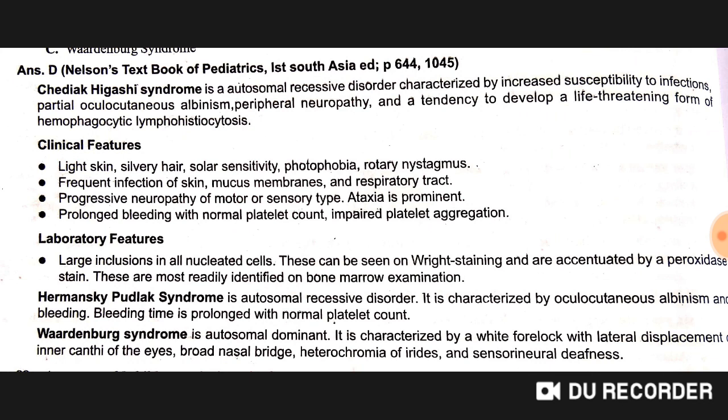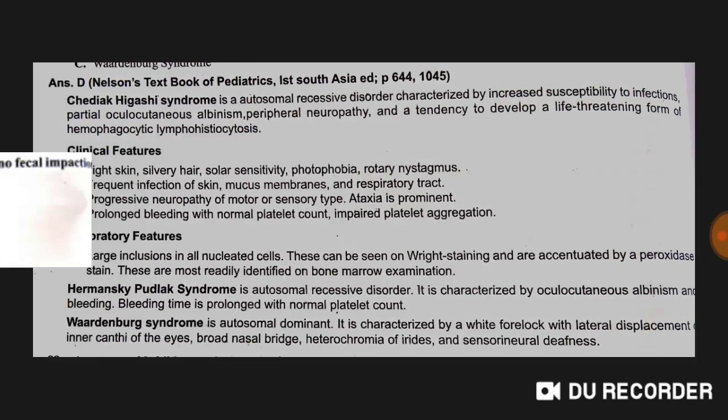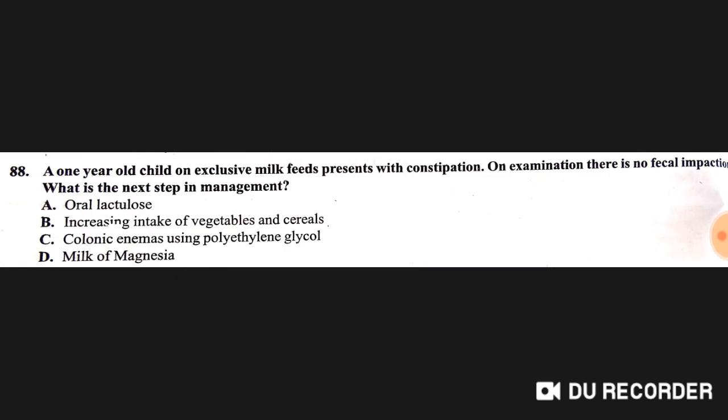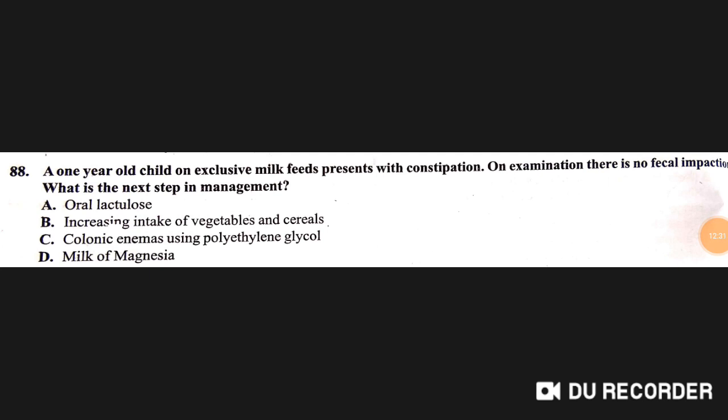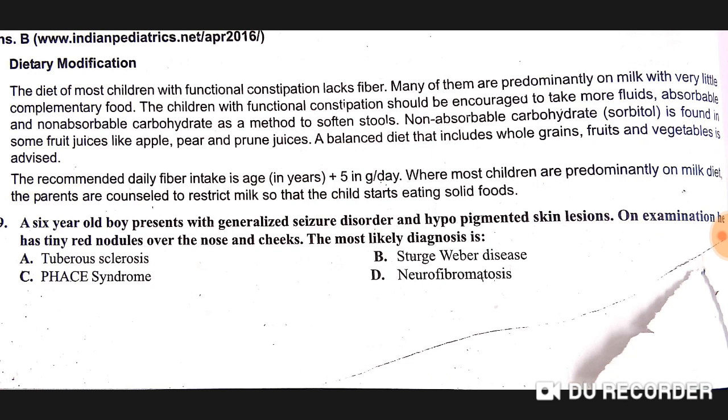Chediak-Higashi syndrome features include oculocutaneous albinism, peripheral neuropathy, and a tendency to develop a life-threatening hemophagocytic lymphohistiocytosis. A one-year-old child on exclusive milk feeds presents with constipation, with no fecal impaction on examination. The next step in management is to increase the intake of vegetables and cereals, as most children with functional constipation lack fiber.